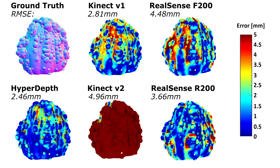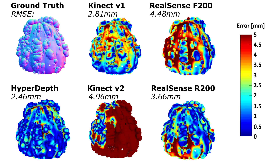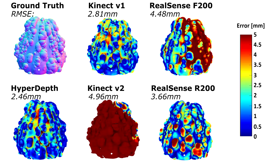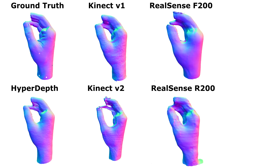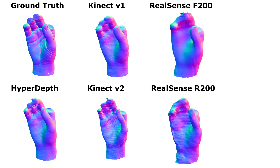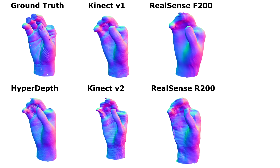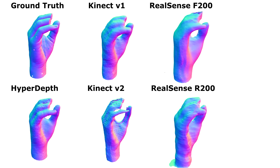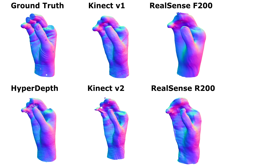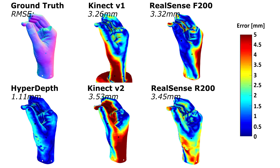This improved reconstruction error is due to HyperDepth's ability to regress very accurate depth estimates without quantization effects that we see in stereo methods, or multipath effects that we see in time-of-flight cameras.